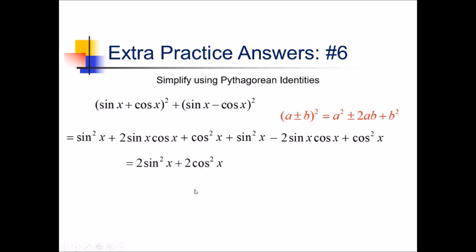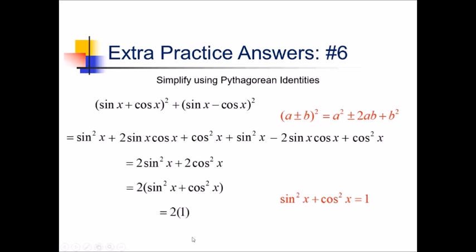So we've got 2 sine squared plus 2 cosine squared. One thing we can do is factor out the common factor of 2, leaving us with sine squared plus cosine squared inside. That should look familiar — sine squared plus cosine squared equals 1, so this is really just 2 times 1, which of course is just 2.